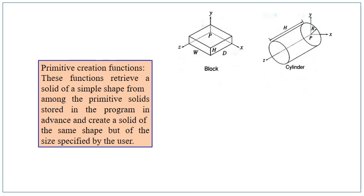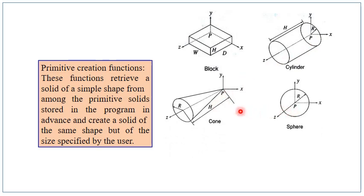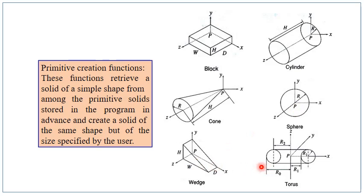Here are some examples. The first one is a square drawn in a 2D plane, and on extruding this basic shape we get a cube. In another example, a circle is drawn in a 2D plane and on extrusion we get a cylinder.